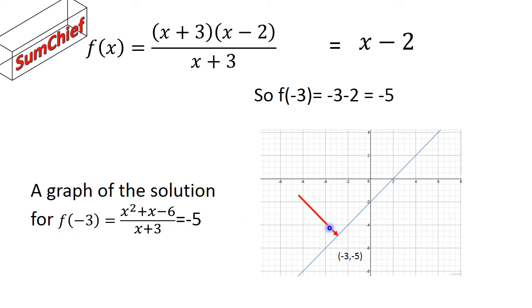We've just got that there and I've drawn a little graph here with a red pointer pointing to where it is. When x equals minus 3, y equals minus 5. And that's the solution to our question.